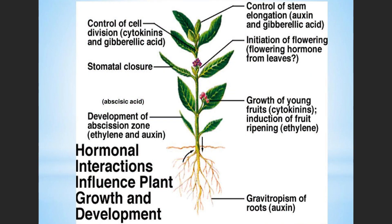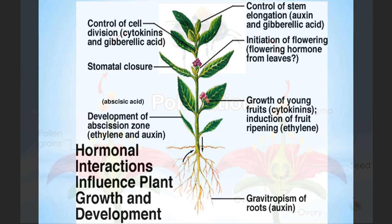5. Growth hormones: plants produce hormones that regulate various growth processes. For example, auxins promote root growth and apical dominance, cytokinins stimulate cell division, and gibberellins influence stem elongation and flowering. Understanding these hormones can help you manipulate plant growth and development when necessary.